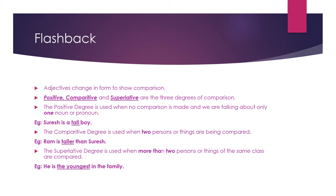The comparative degree is used when two persons or things are being compared. For example, 'Ram is taller than Suresh.' In this example, we have only two persons — Ram and Suresh — and between these two, Ram is taller than Suresh. That is the comparative degree.